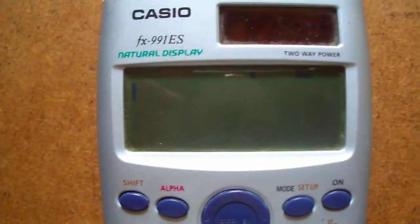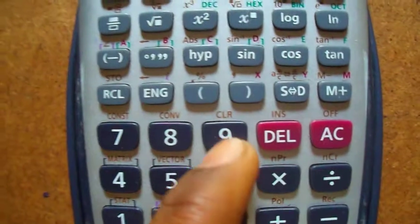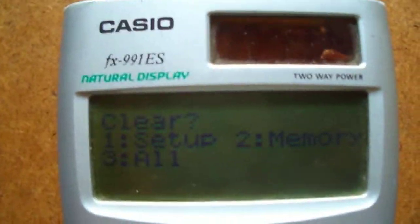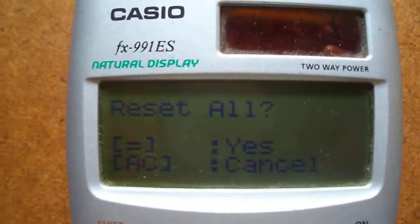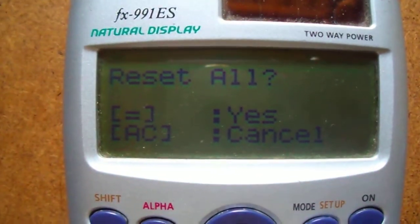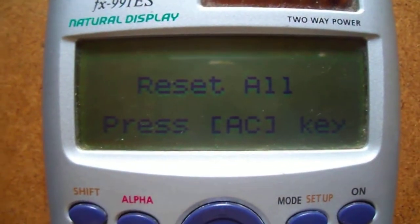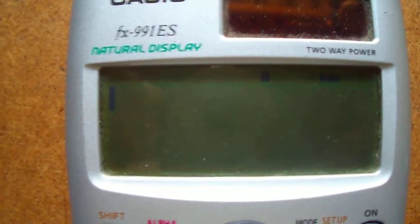If it's not set in default mode, press SHIFT and then press 9. Select the third option ALL. Then press equal to. Then press AC. Now your Casio FX will be set in default mode.